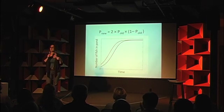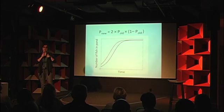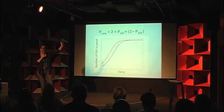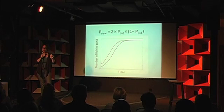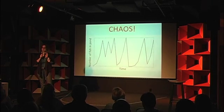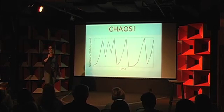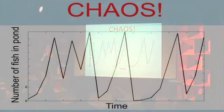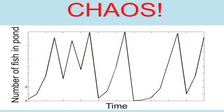Now let's see what happens if instead of changing my starting number, I change that number two that's in the front of the equation. I'm going to increase it up to around four — and I get chaos. This curve is just counting the number of fish in my pond, but now instead of nicely growing and flattening out, it's all over the place. It looks incredibly erratic — one might say chaotic.